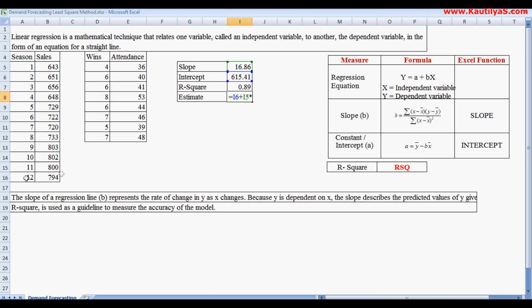What will be our sales in season 13? So approximately our sales will be 834.